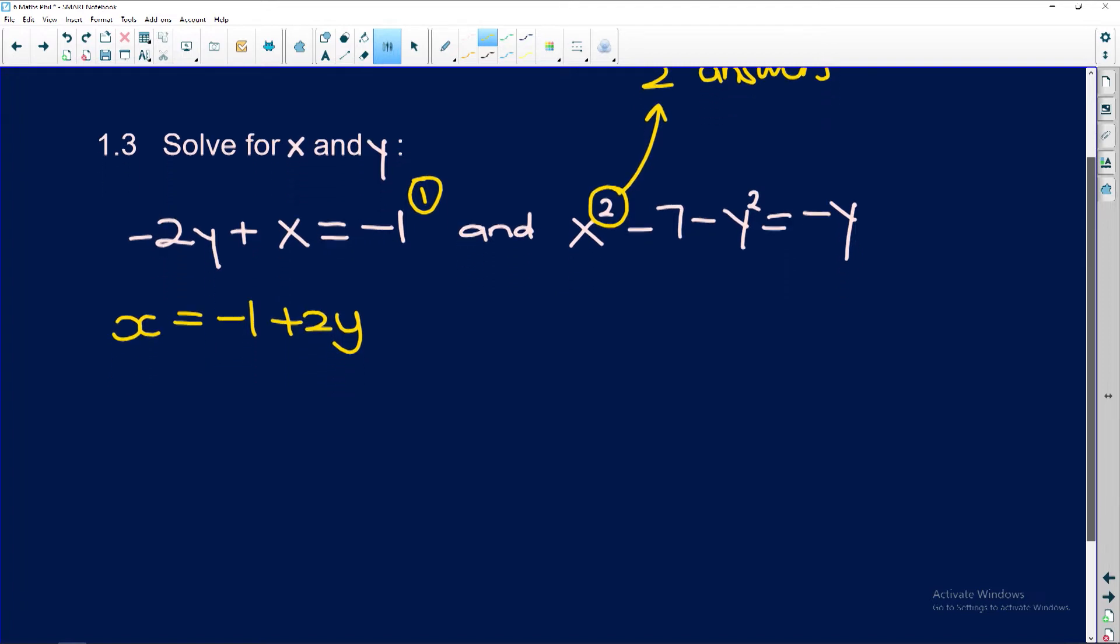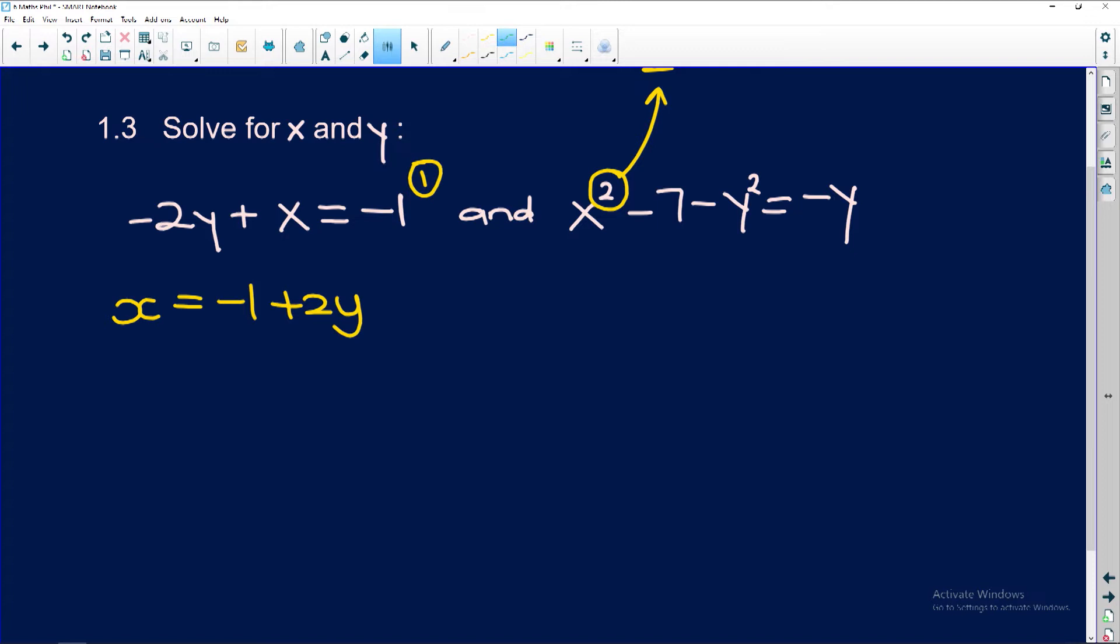So now if I look over here, every time I see an x in the second equation, I substitute this whole expression in there. So I'm going to get that over here, negative 1 plus 2y all squared minus 7 minus y squared is equal to negative y.